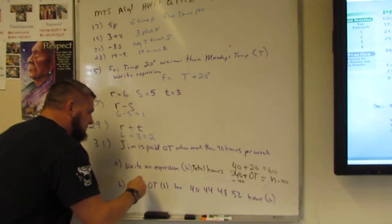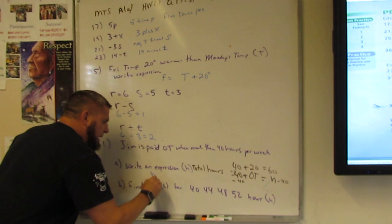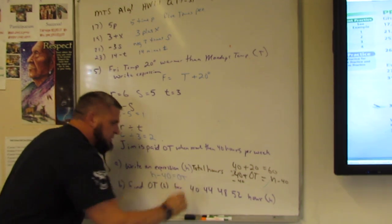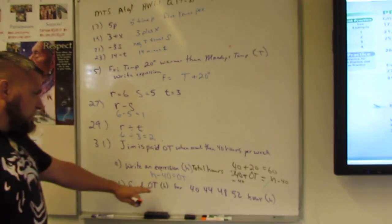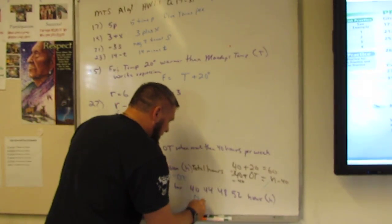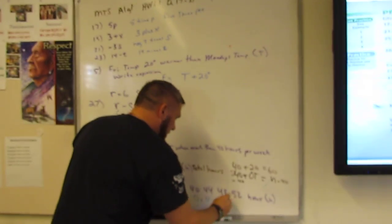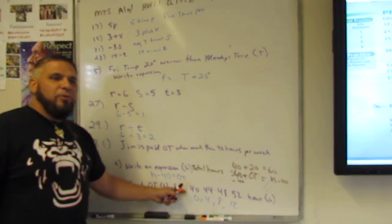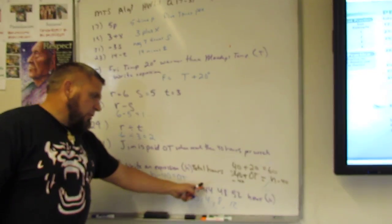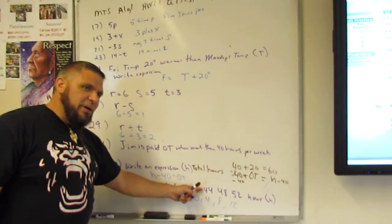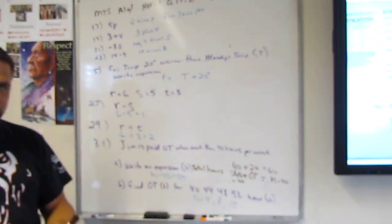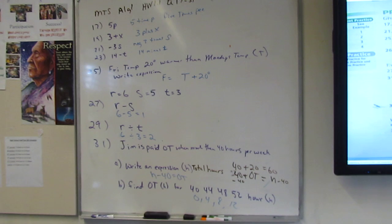So what they're looking for here is they're looking for the amount of hours minus 40 is equal to this OT. And then you're able to go, okay, he has no OT. He has four hours OT. He has eight hours OT. And he has 12 hours OT because 40 minus 40 is zero. 44 minus 40 is four. 48 minus 40 is eight. And 52 minus 40 is 12. Okay? That's what they're looking for. Okay?